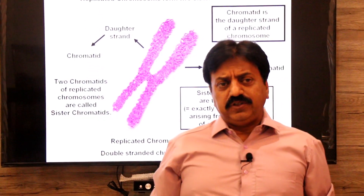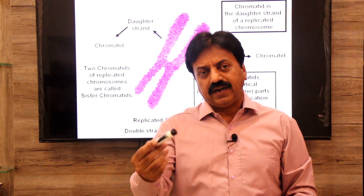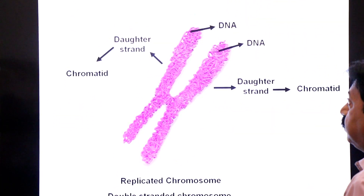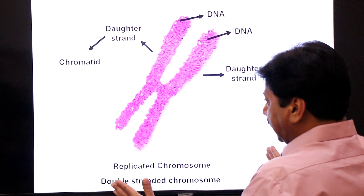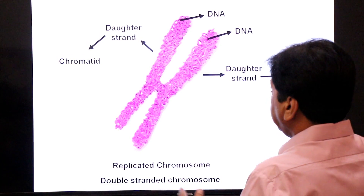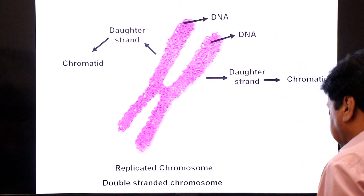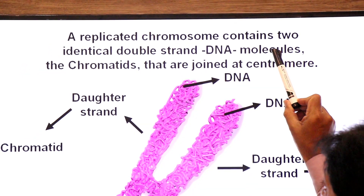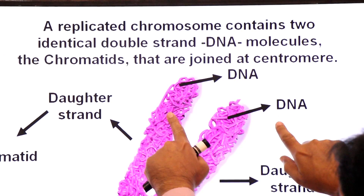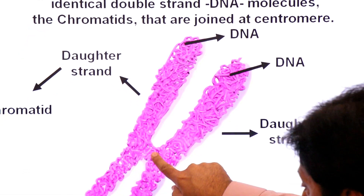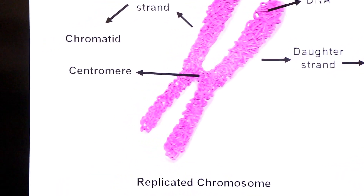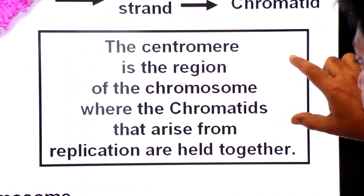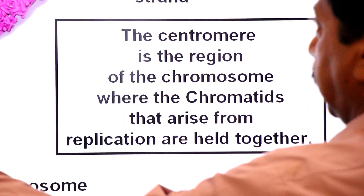What is the difference between a chromosome and a chromatid? A replicated chromosome contains two identical double-stranded DNA molecules — the chromatids. A replicated chromosome contain two identical double-extended DNA molecules, called chromatids, that are joined at the centromere. The centromere is the region of the chromosome where the two chromatids that arise from replication are held together.